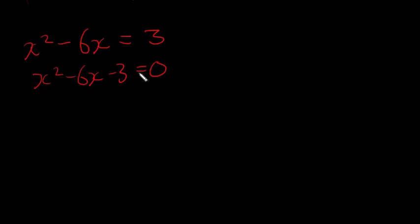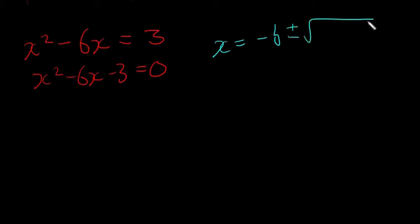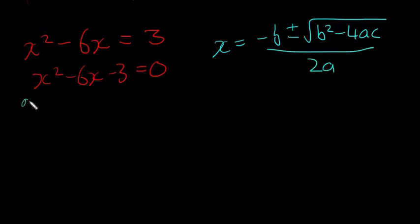I can't think of any factors that will work here — nothing multiplies to give minus 3 and adds to give minus 6 — so I'm going to use the quadratic formula: X equals minus B plus or minus the square root of B squared minus 4AC, all over 2A. Here A equals 1, B equals minus 6, and C equals minus 3.